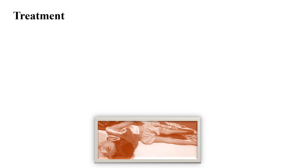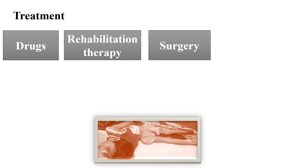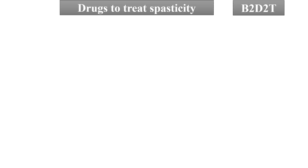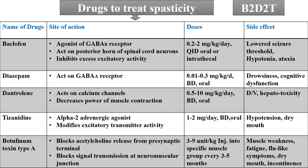Treatment of cerebral palsy: the drugs indicated for spasticity are baclofen, diazepam, dantrolene, tizanidine, and botulinum toxin type A. You can remember them by the trick B2 D2 T: B2 is baclofen and botulinum toxin, D2 is diazepam and dantrolene, and T is tizanidine. Baclofen is a GABA-B receptor agonist; it acts on the posterior horn of spinal cord neurons and inhibits excess excitatory activity.